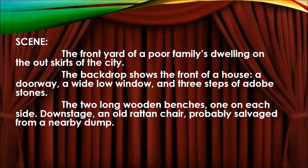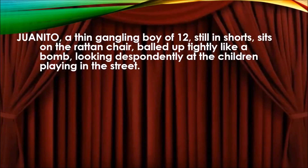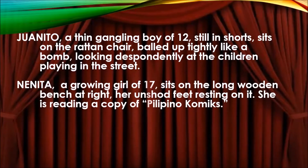The backdrop shows the front of a house, a doorway, a wide low window, and three steps of adobe stones. There are two long wooden benches, one on each side downstage, and an old rattan chair probably salvaged from a nearby dump. The street is to the left; the sound of children playing can be heard. Ito, a thin gangling boy of 12 still in shorts, sits under the rattan chair, looking despondently at the children playing in the street. Nenita, a growing girl of 17, sits on the long wooden bench at right, her unshod feet resting on it — she is reading a copy of Filipino comics.